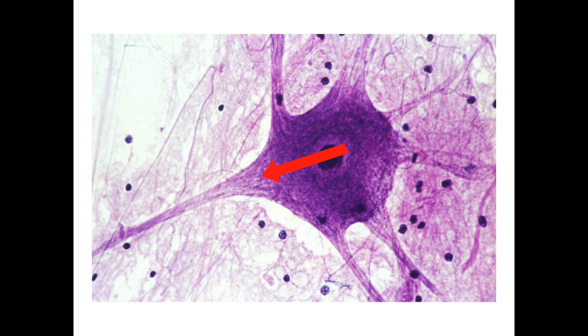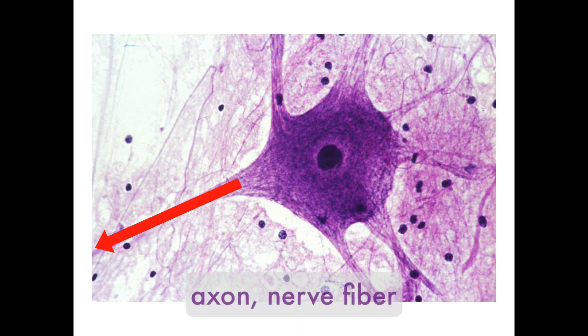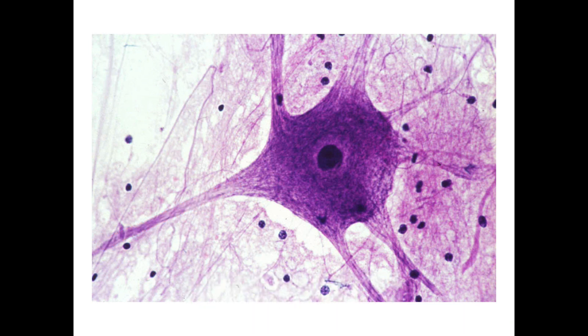That message goes from the neurosoma into the longer axon, or nerve fiber — that's the long fiber you see extending on the left side. These axons can be more than a meter long, extending from the brain stem to the foot.